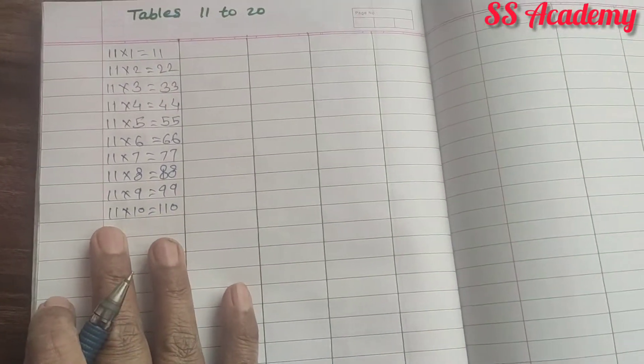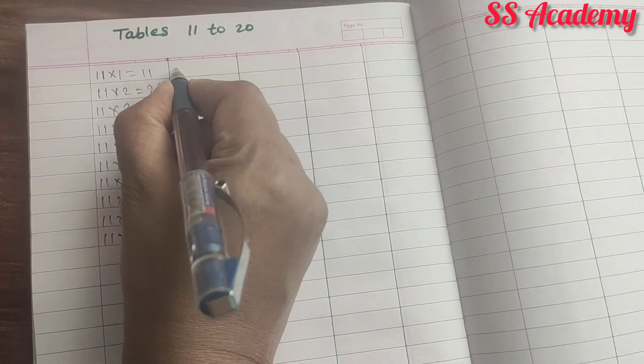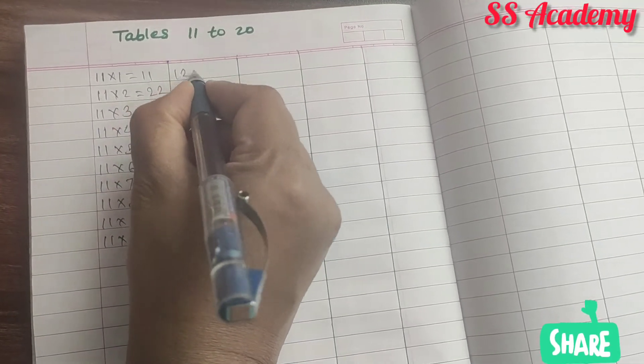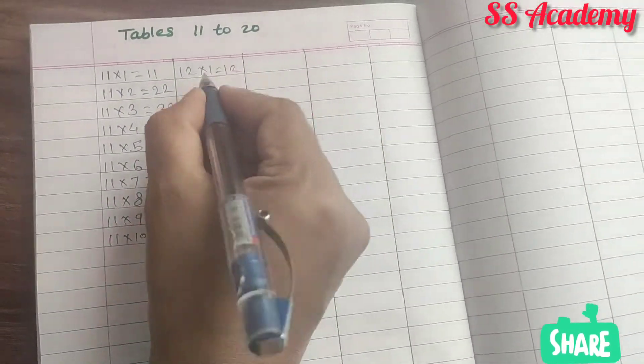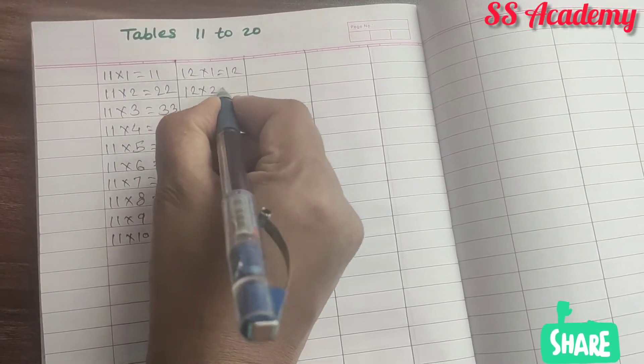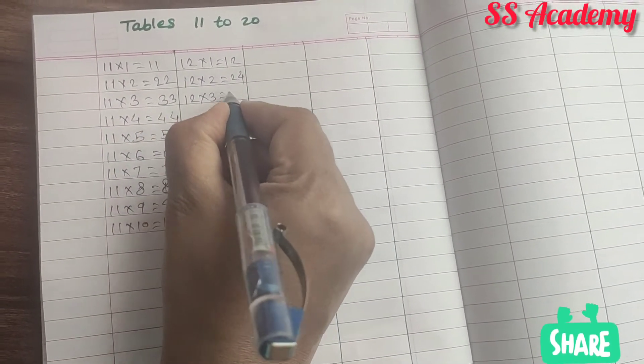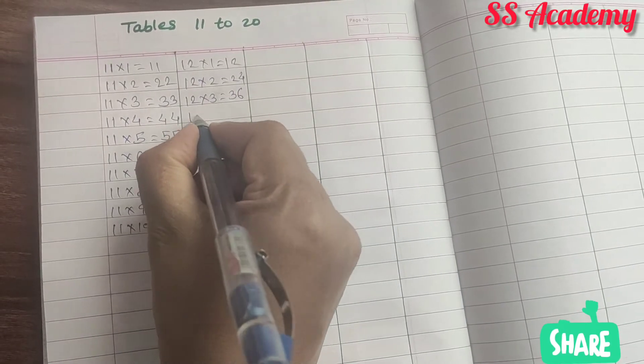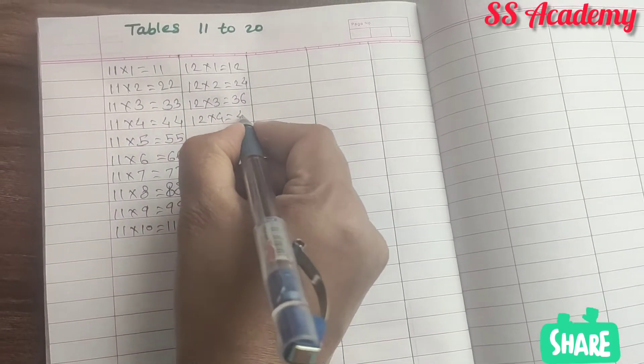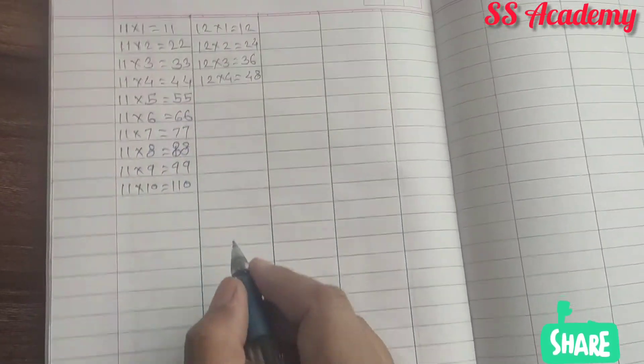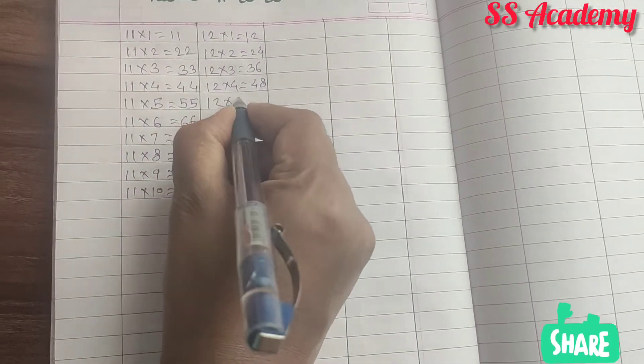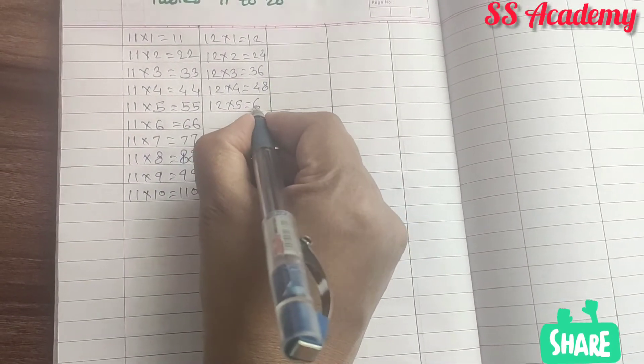Next table, 12. 12 times 1 is 12. 12 times 2 is 24. 12 times 3 is 36. 12 times 4 is 48. 12 times 5 is 60.